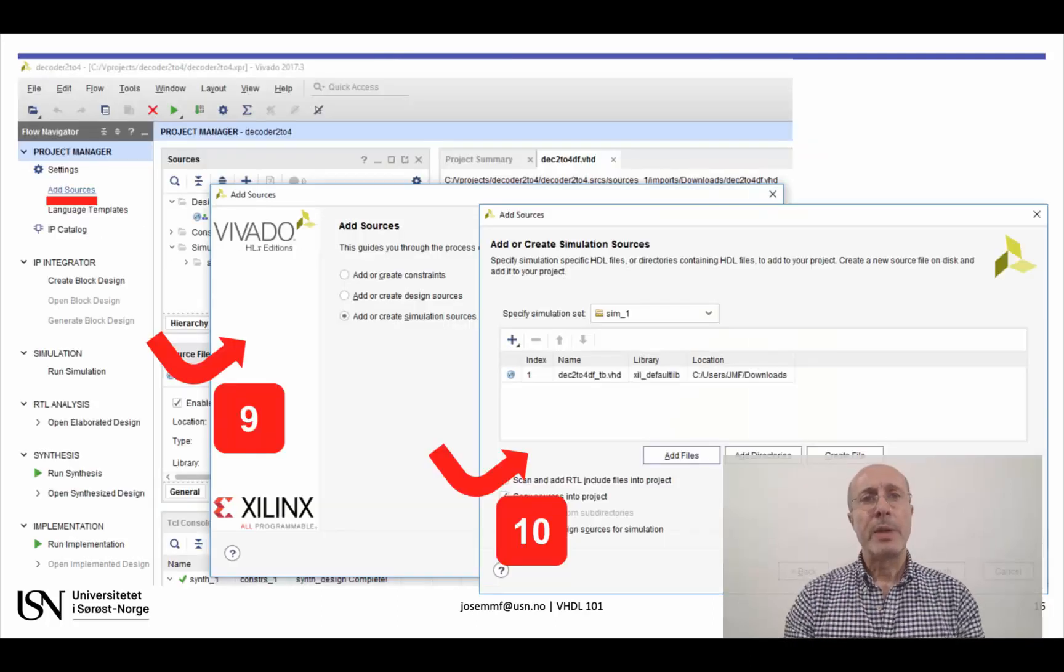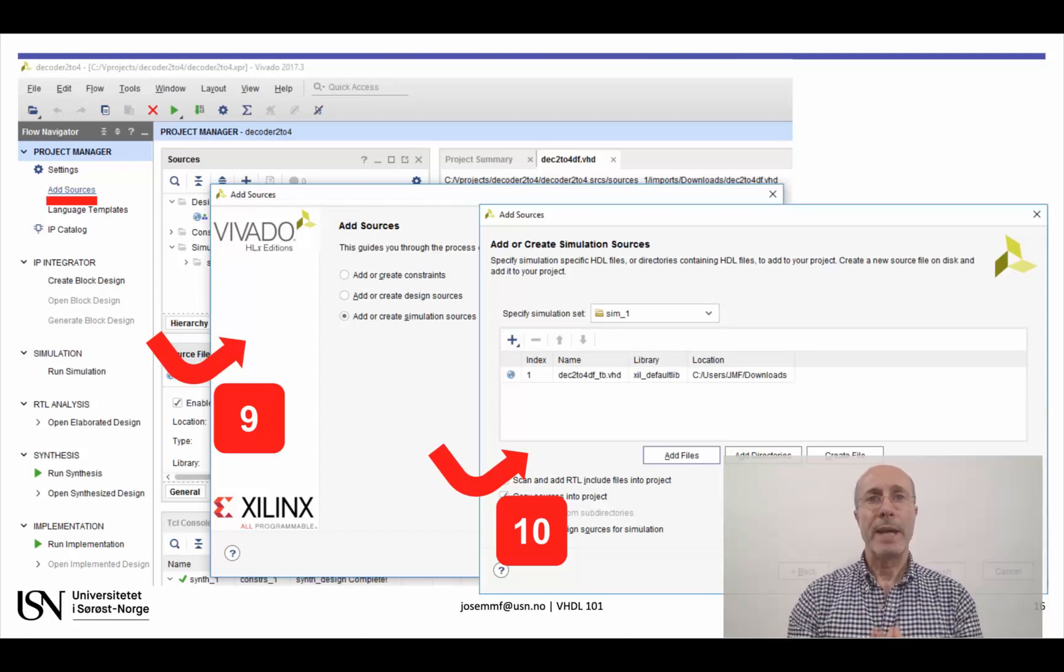Since the simulation source file is already available, we will import it to VIVADO by clicking on Add Sources as before, but now choosing the option Add or Create Simulation Sources. Once the file has been selected, we can click on Finish and we are ready to start simulation.